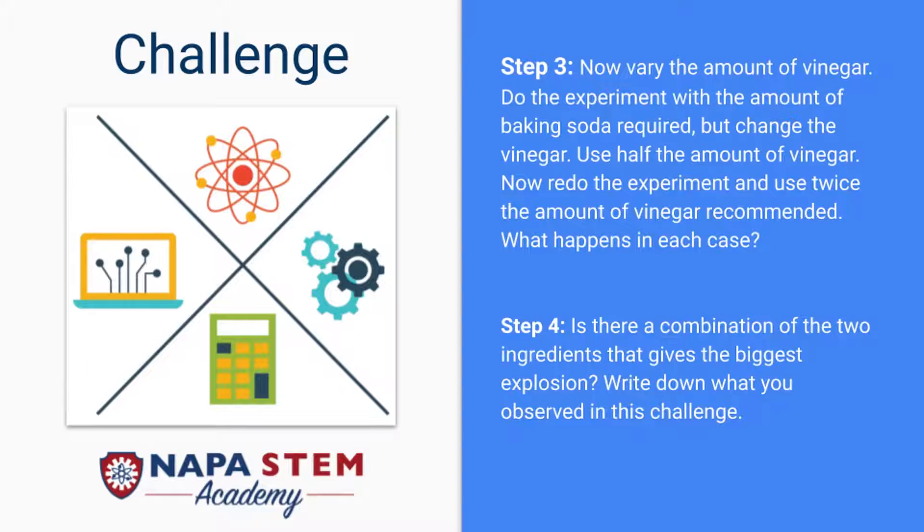Now, vary the amount of vinegar. Do the experiment with the amount of baking soda required, but change the vinegar measurements. Use half the amount of vinegar. After that, redo the experiment and use twice the amount of vinegar recommended. What happened in each case?